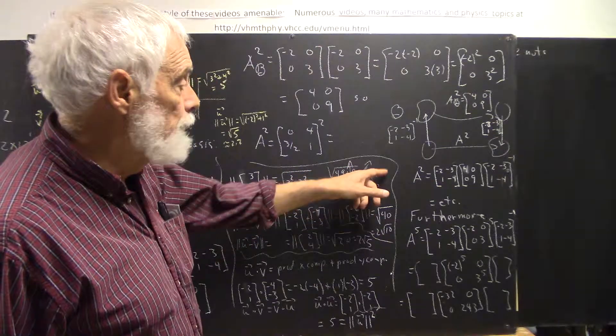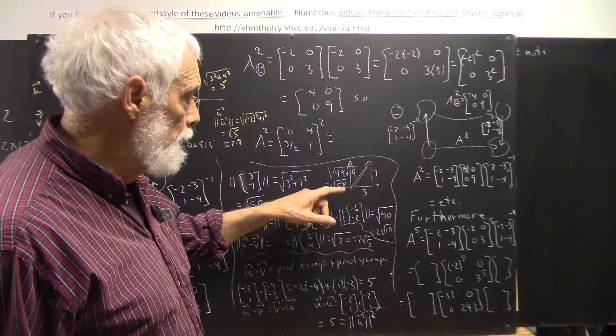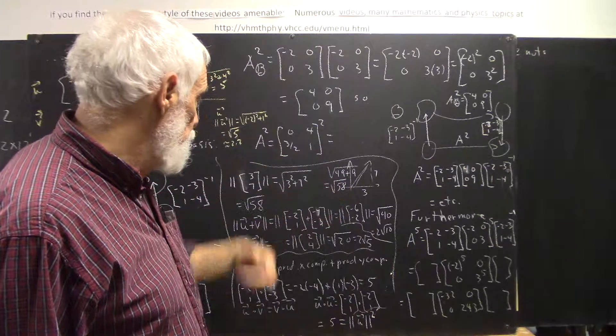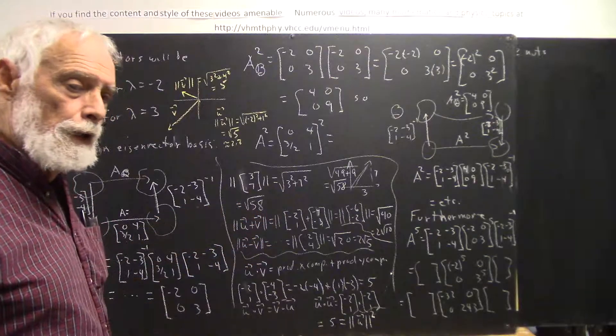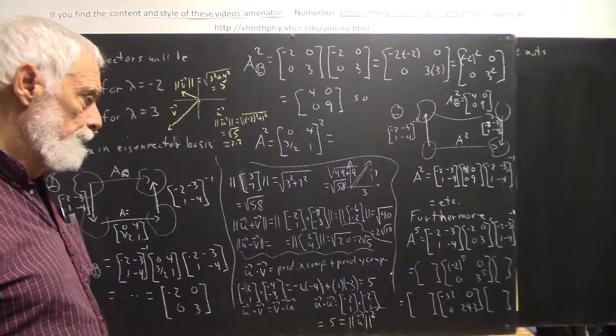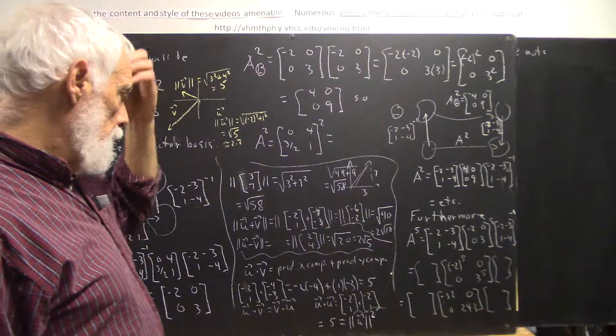And that's square root of 58. So we say the magnitude of this vector is 3 squared plus 7 squared, square root of 58. We could calculate the magnitude of u plus v.